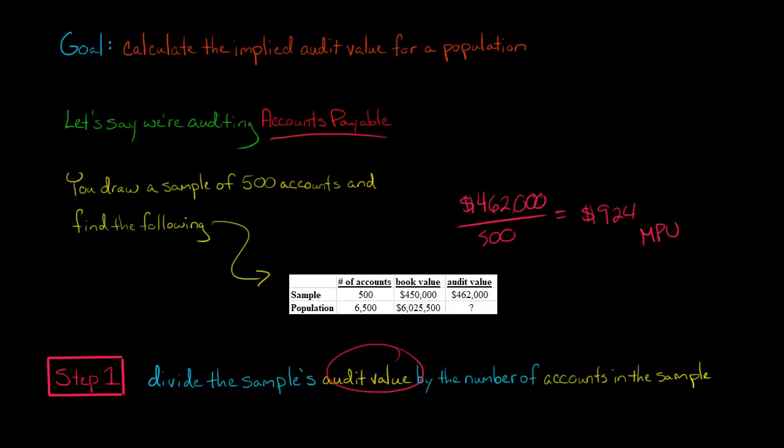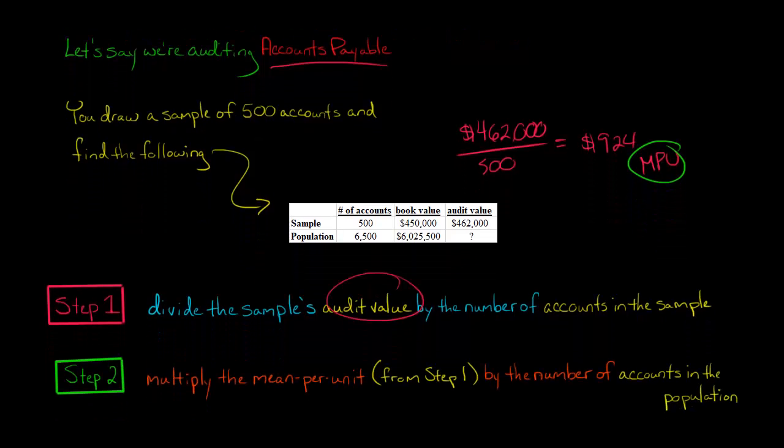So this is our mean per unit. And now that we know the mean per unit, we're going to go to step two, and we're going to say, okay, let's take that mean per unit of $924, and let's multiply it by the number of accounts in the population.